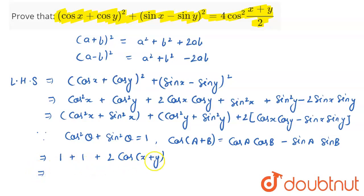So this becomes 2 + 2 cos(x + y). Taking 2 common, it has become 2(1 + cos(x + y)).